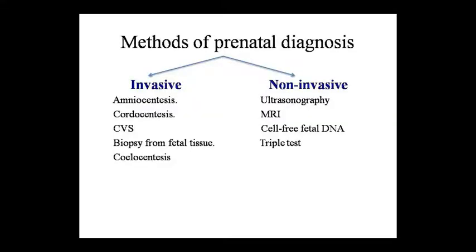What can the methods be? Methods can be invasive and non-invasive. Invasive methods include amniocentesis, cordocentesis, CVS, biopsy from fetal tissue, and coelocentesis. Non-invasive methods include ultrasonography (USG), MRI, cell-free fetal DNA, and triple test. Generally, fetoscopy, fetal blood sampling, cord blood sampling, maternal blood sampling, pre-implantation technique, and techniques using recombinant DNA technology are also used.